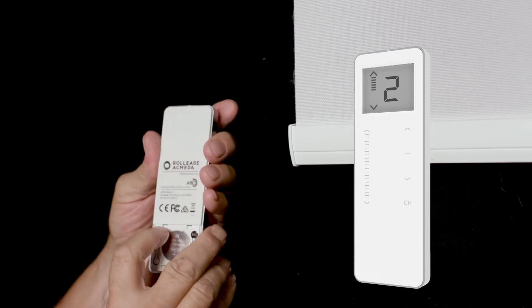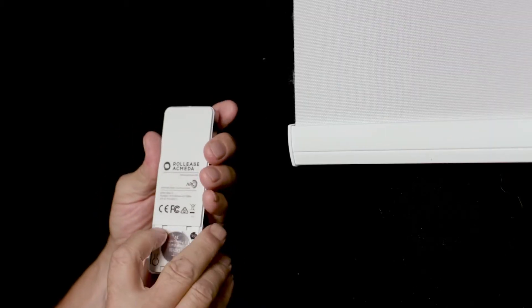Remove the battery cover from the remote. Press the P2 button. The shade will jog once.